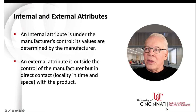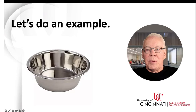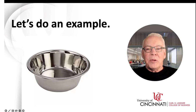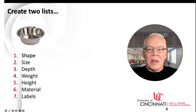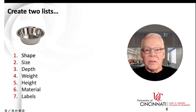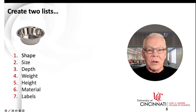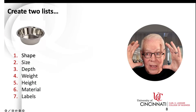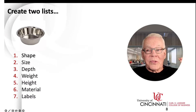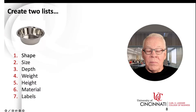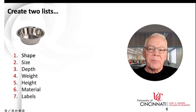Here's an example — let's look at a good old-fashioned dog bowl. Starting the attribute dependency process, we make two lists. First, the internal attributes: the shape, the size, how deep it is, how much it weighs, the height, the material, and any labels written on it. There are lots of attributes of this thing, but these are the main ones we would think about with a dog bowl.